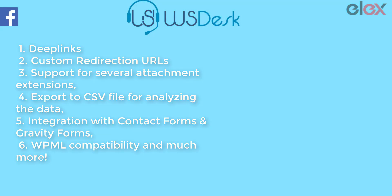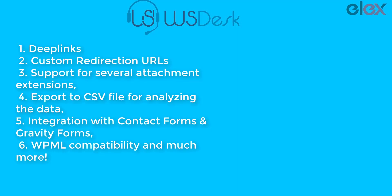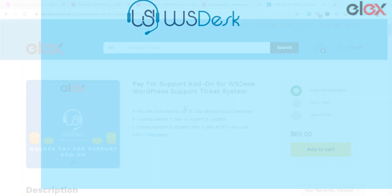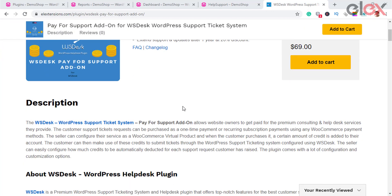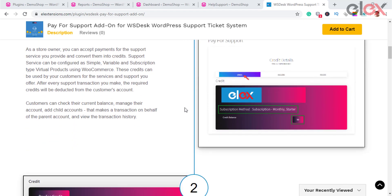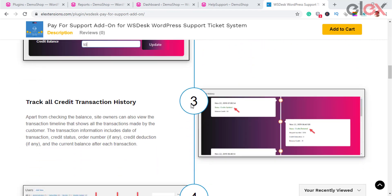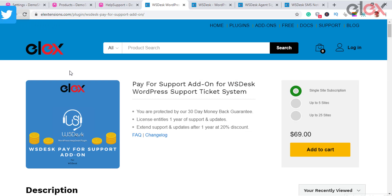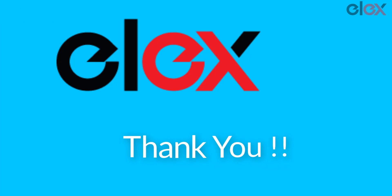WS Desk offers many advanced features including deep links, custom redirection URLs, support for several attachment extensions, export to CSV for data analysis, integration with Contact Forms and Gravity Forms, WPML compatibility, and much more. If you are looking to charge customers for consultation or support, the Pay for Support add-on for WS Desk enables you to convert purchases to credits and manage the credits allocated based on customer usage. Look for the link in the description. Thank you for watching — for more interesting plugins, please visit www.l-extensions.com.